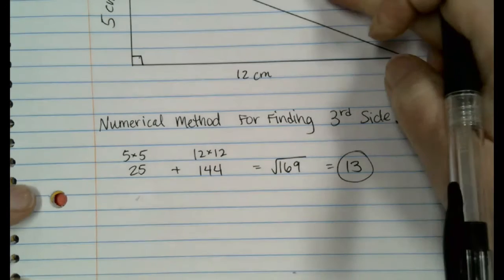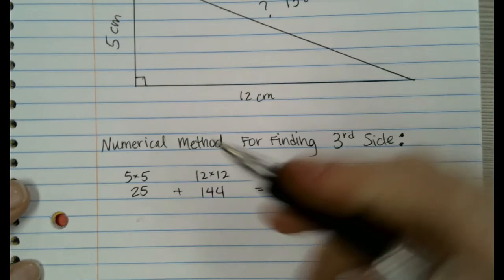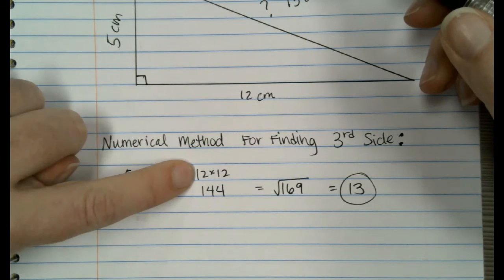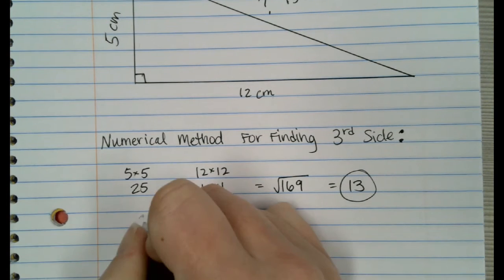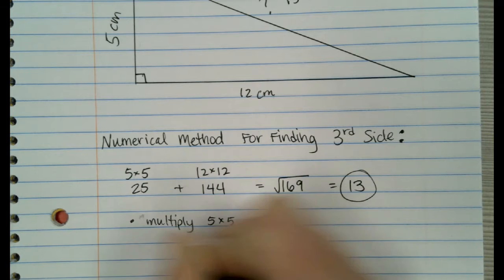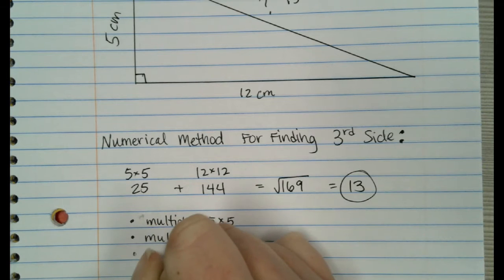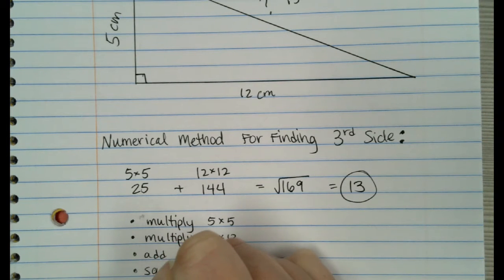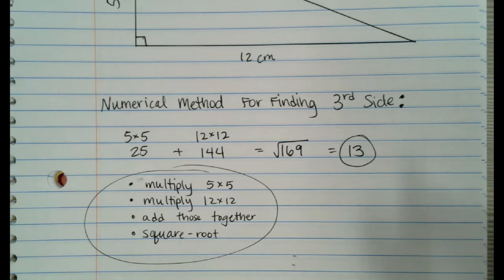This might look a little complicated but it's really not. You multiply this side by itself — 5 times 5. You multiply this side by itself — 12 times 12. Add your two numbers together, then square root it. We talked about square rooting yesterday. So that's our numerical method.